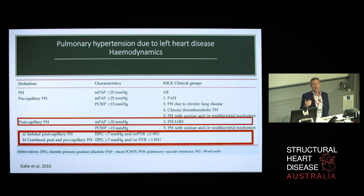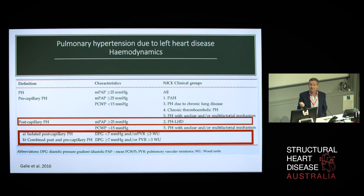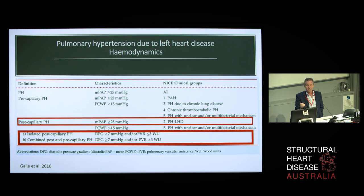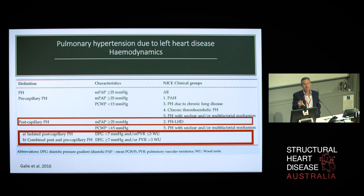How common is that? If you've got pulmonary hypertension due to left heart disease, what proportion of people have a pulmonary vasoreactivity component? The answer is 13%. That might not sound like much, but given that pulmonary hypertension due to left heart disease is over 90% of all pulmonary hypertension, this group of combined post- and pre-capillary actually outnumber the idiopathics by 10 to 1. So it's a diagnosis worth making because it really makes a difference to patients.